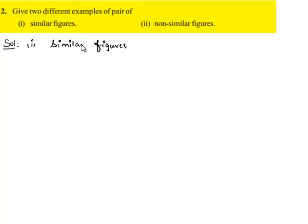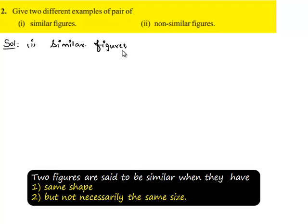We know that two figures are said to be similar when the shape of two figures is same but size may not be equal.